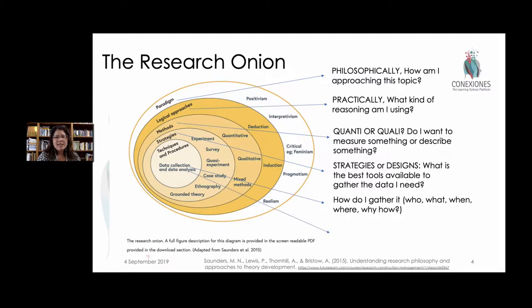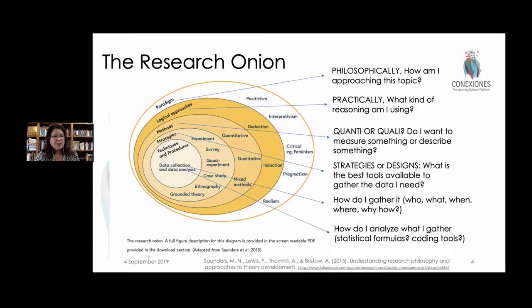There's also the next level of analyzing the data, which is also very complicated. Once you've got that data and collected it, what are you going to do? Are you going to apply a formula to get a number? Or are you going to code all the words that the kids said to each other to categorize information? How will you approach the data collection and the data analysis? These are the different layers of research indicated here.